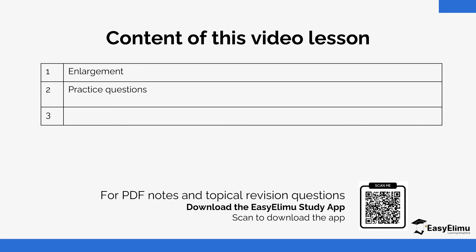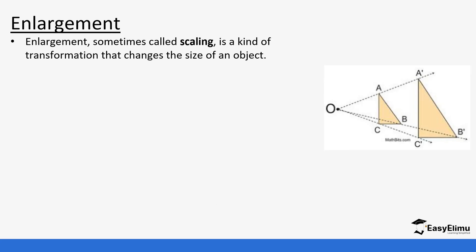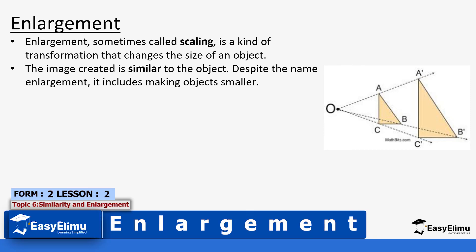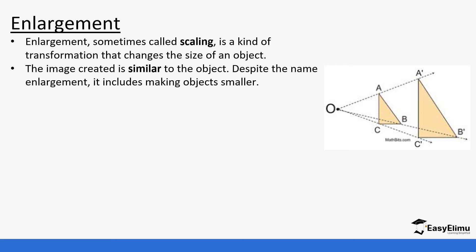So let's do the actual enlargement. Enlargement is sometimes referred to as scaling. It is a kind of transformation that changes the size of the object — basically you're making the object bigger, enlarging it. And the image created is usually similar to the object. Despite the name, enlargement also includes making objects smaller. That's where fraction scale factors come in — the image can also be made smaller.